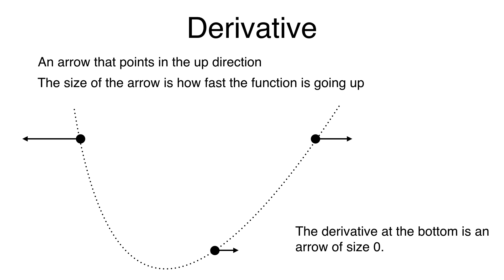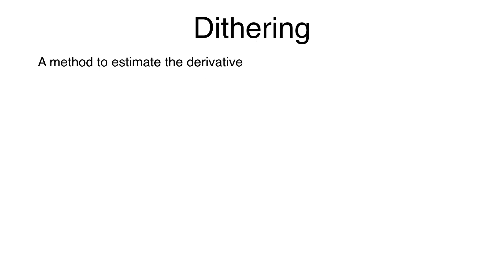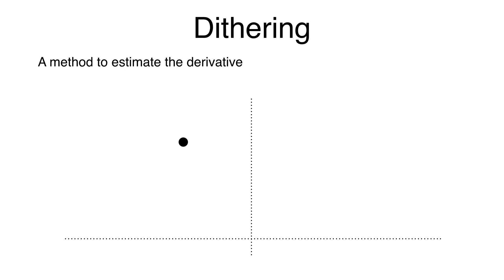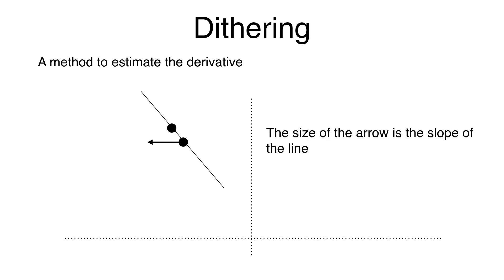If you know calculus, you might know how to calculate the derivative. But sometimes we don't have an expression for the function, or for other reasons we just can't take the derivative. So I'll explain dithering — a method for estimating the derivative. We evaluate the function close to our point of interest, then fit a line to both of those points. We see the direction the function is moving and know the slope of that line. Our arrow points in that direction, with size equal to the slope. That's our estimate of the derivative.